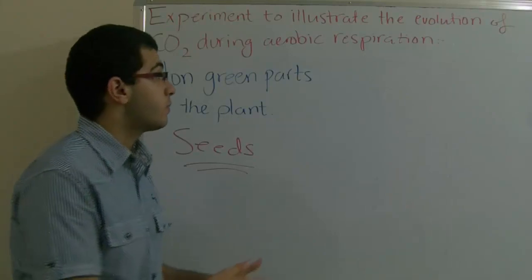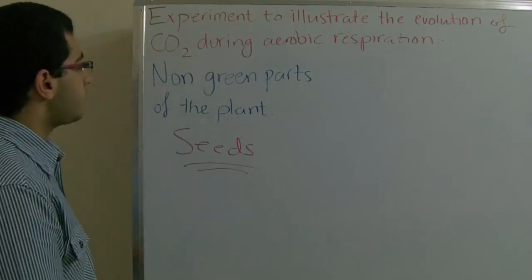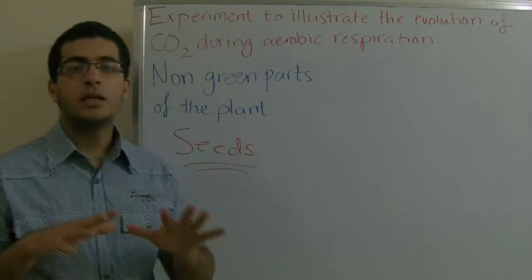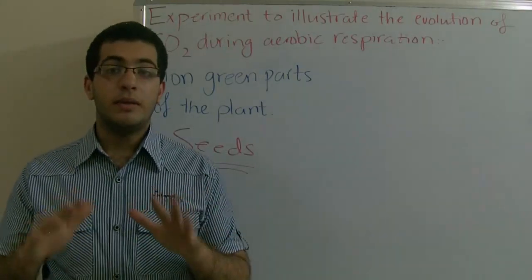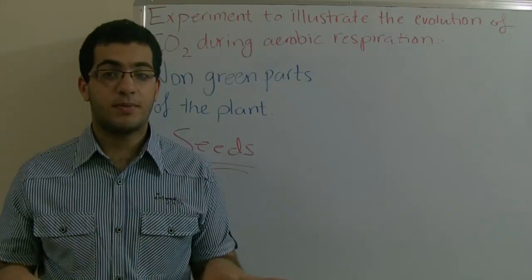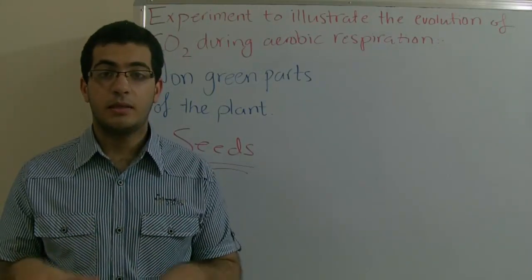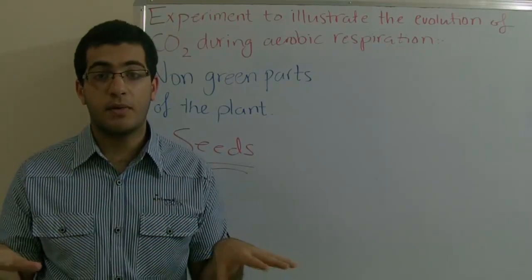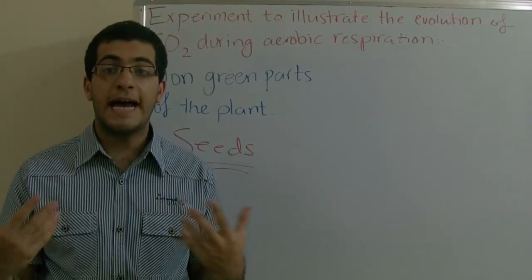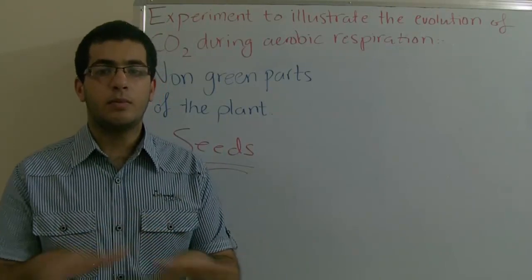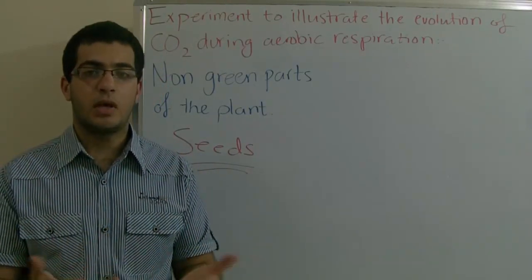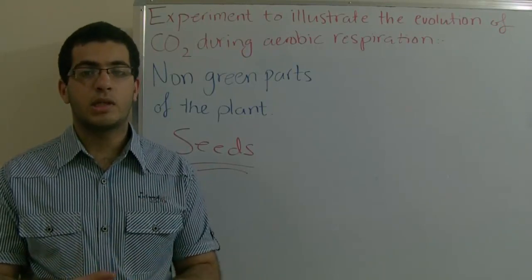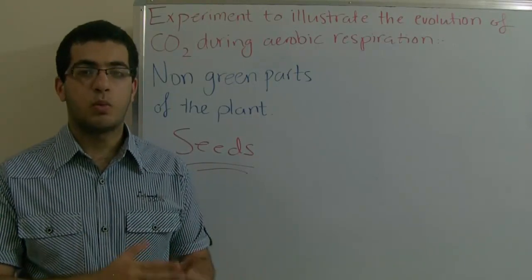Here is the interpretation. In the first retort we had dry seeds. These dry seeds do not respire — they are not active, so they do not perform respiration. Therefore, carbon dioxide is not produced, and no changes happen in apparatus 1.